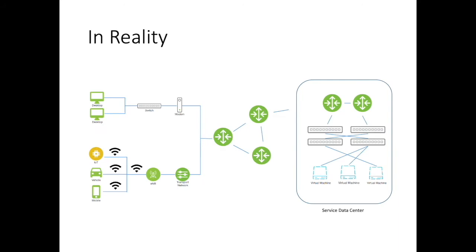In reality, the network is diverse and complex. The simplified user view expands here to show the real-world complexity. For a mobile device to watch Netflix, the traffic needs to go through a diverse set of equipment — through cell towers, then to the transport network, then to the core network. There are also many protocols to support different operations along the way.